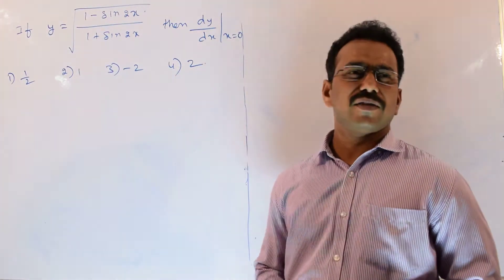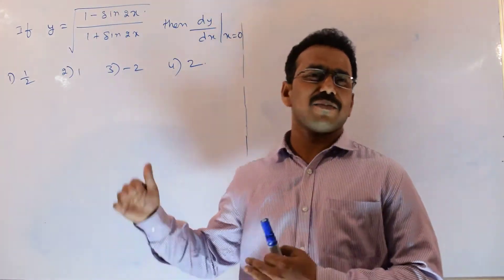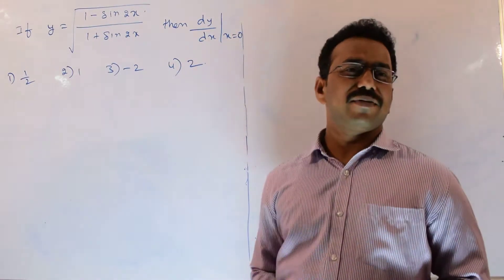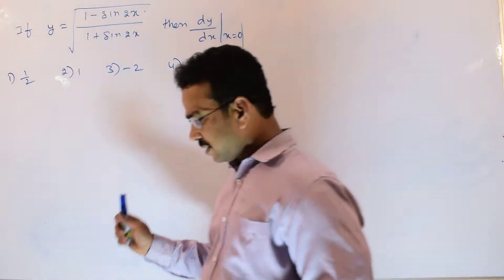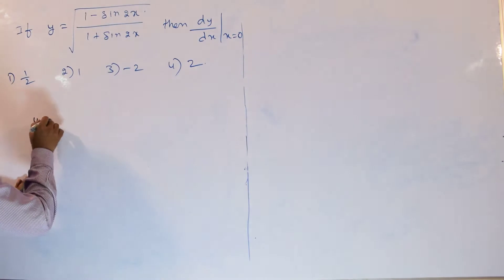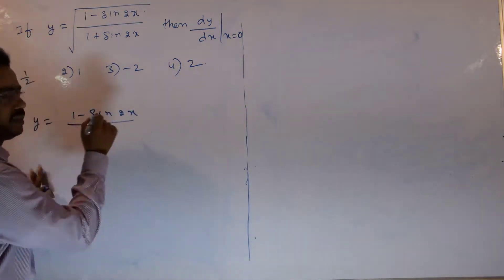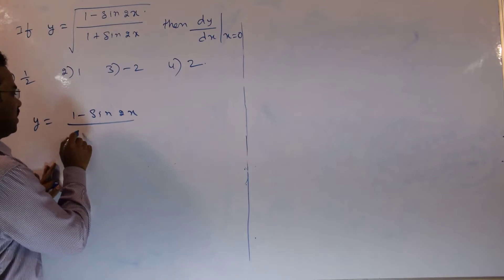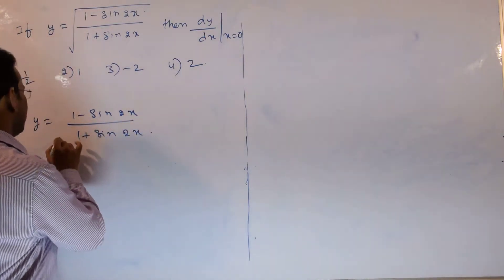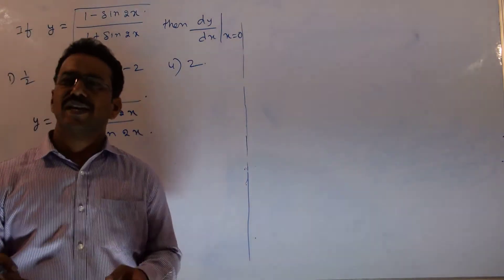The given function is y equal to the square root of (1 minus sin 2x)/(1 plus sin 2x). We have to simplify so that we can apply the standard formula from differentiation. What is the formula for sin 2x? Writing it as sin x cos x is not helpful at all.